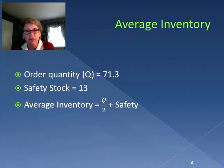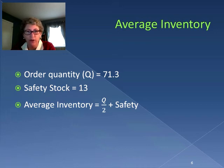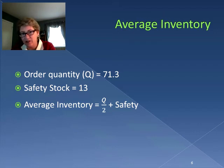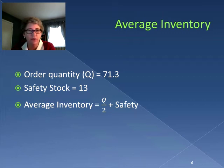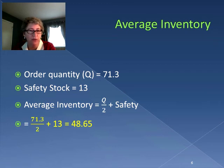Calculating average inventory, we take Q over 2 — the order quantity divided in half — and then add in the safety stock, because we never get down to zero when using safety stock. Our order quantity is 71.3 divided by 2, plus 13, giving us an average inventory of 48.65 units.